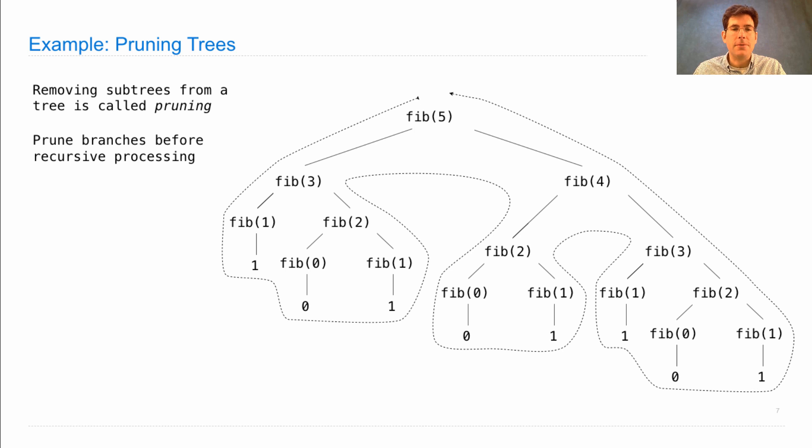In general, to write a function that prunes a tree, you want to perform the pruning before you perform recursive processing because then you don't end up processing the pruned trees. It's not always possible to do this. Sometimes you have to look at a subtree before you know whether to prune it or not. But in some cases, you could just tell by looking at the branch directly.